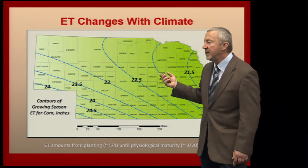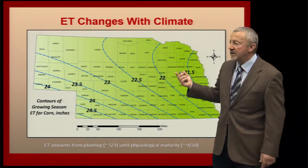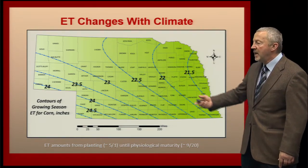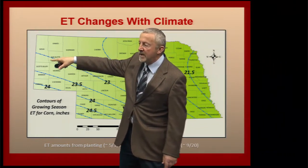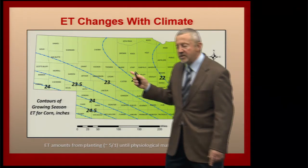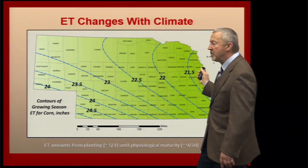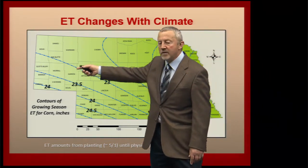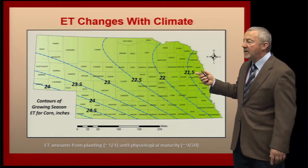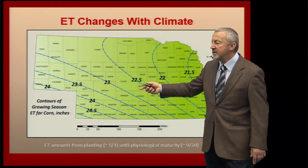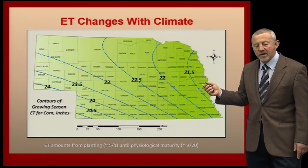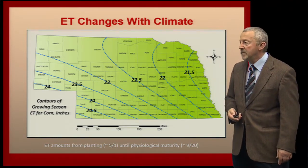Over the growing season, the ET taking place is largely driven by climate. In Nebraska, precipitation ranges from about 35 inches per year in the southeast to 14 to 15 inches in the western part of the state. This represents a shift from sub-humid in the east to semi-arid in the west, with a corresponding reduction in humidity. Because of this, the crop ET for the season for the same crop is considerably higher in the western part of Nebraska than in the east — and that's part of managing these systems according to the conditions experienced out in the field.